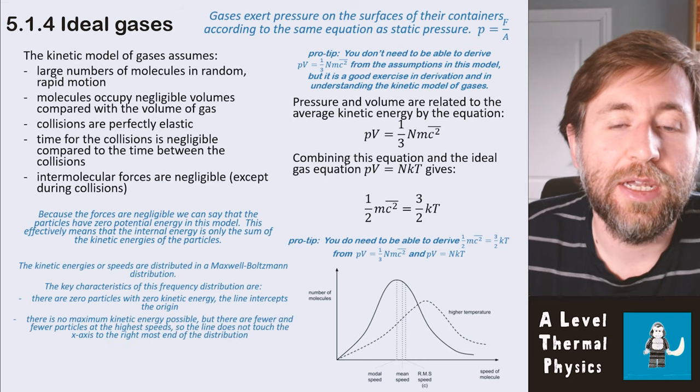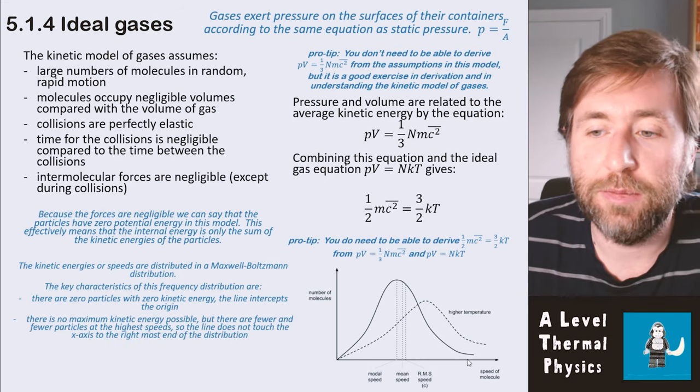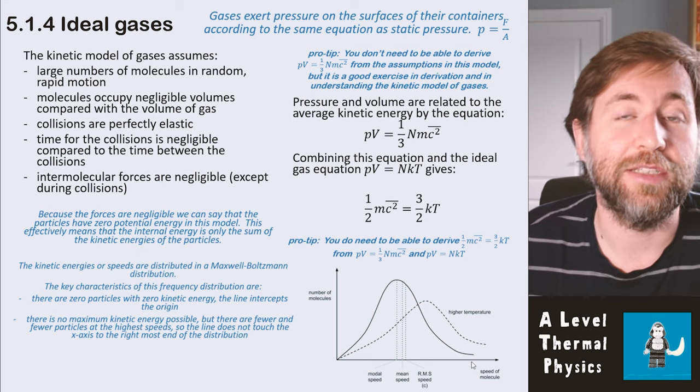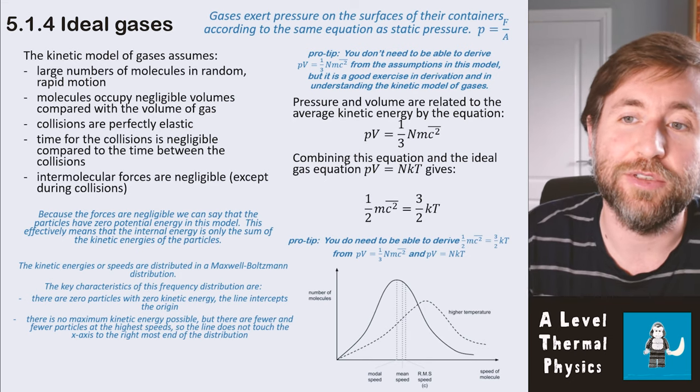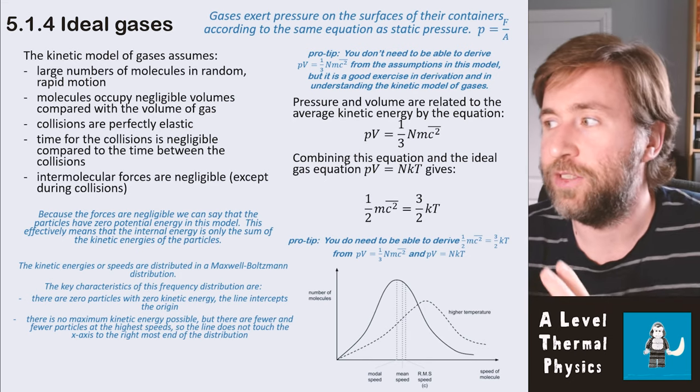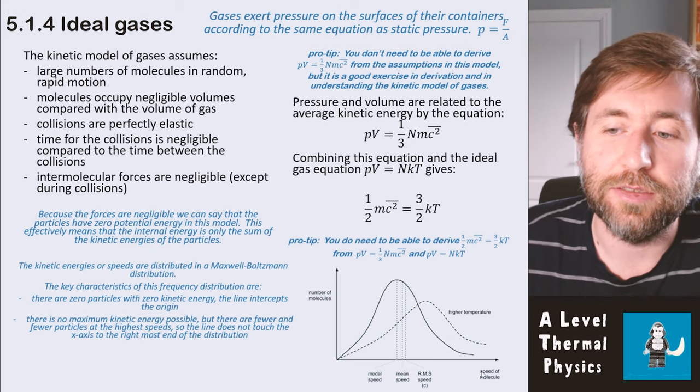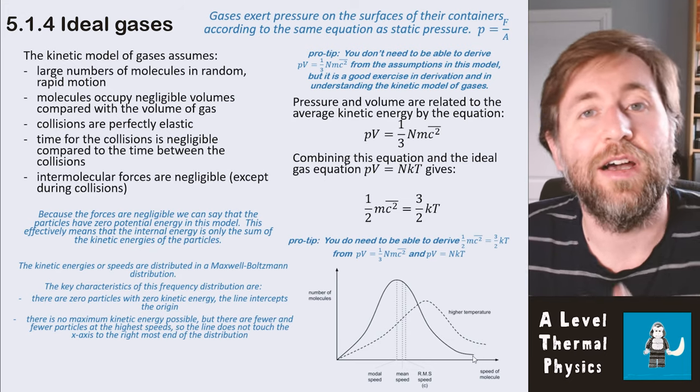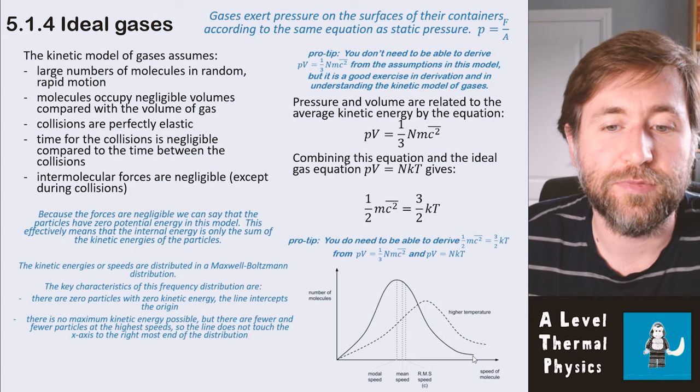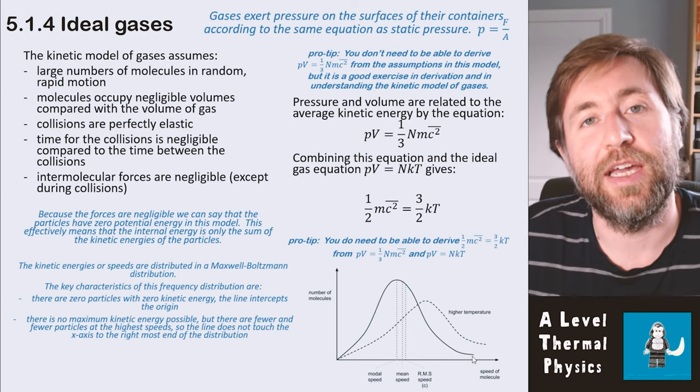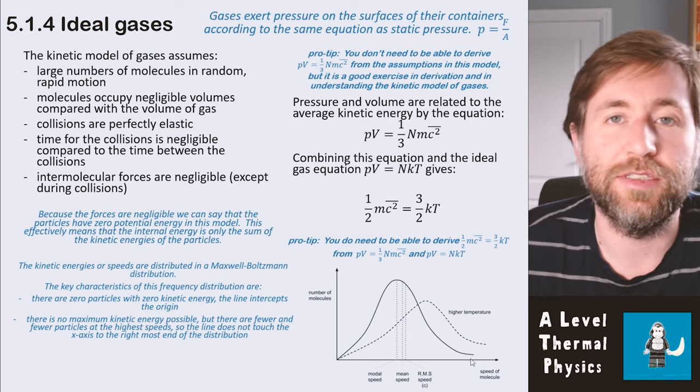And it also shows there's no maximum kinetic energy possible. So if you think back to absolute temperature, there's an absolute zero, but there's no theoretical maximum. So we don't tie the line to the x-axis in the higher speed range. So the line does not touch the x-axis to the right most end of the distribution.